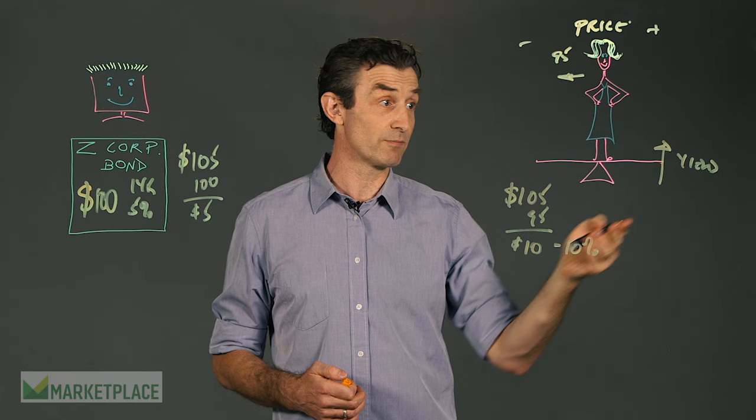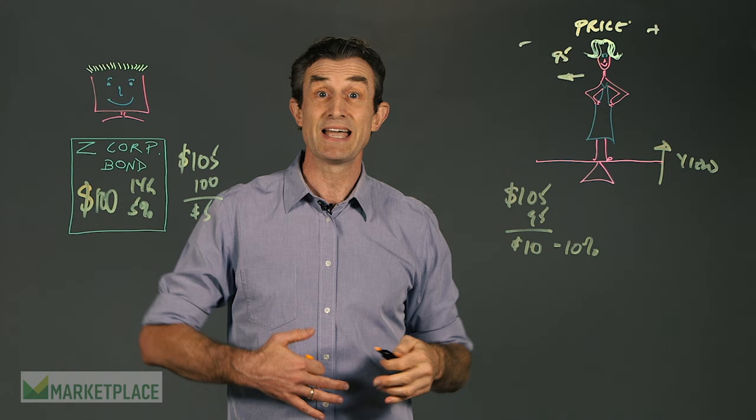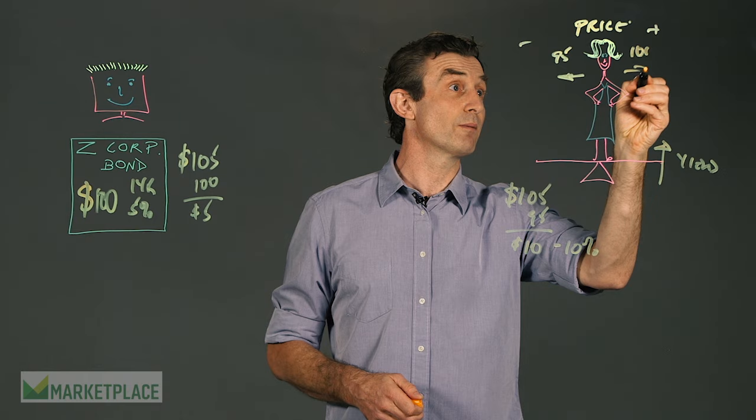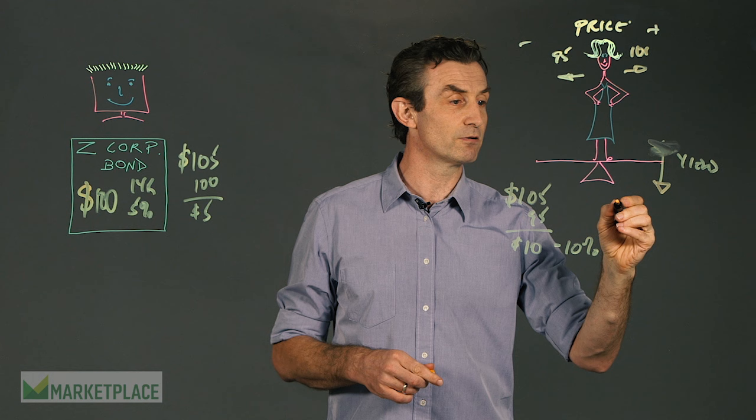But what happens if June decides that she really wants this bond, and she's prepared to pay $101 for it? Well, in this case, she's now going to move this way up the seesaw, which means it's going to tilt in a different direction. It's going to tilt downwards. So you're going to see the yield fall.